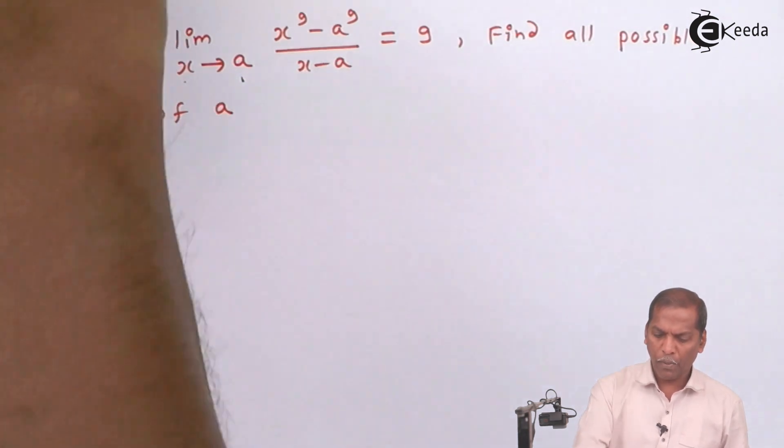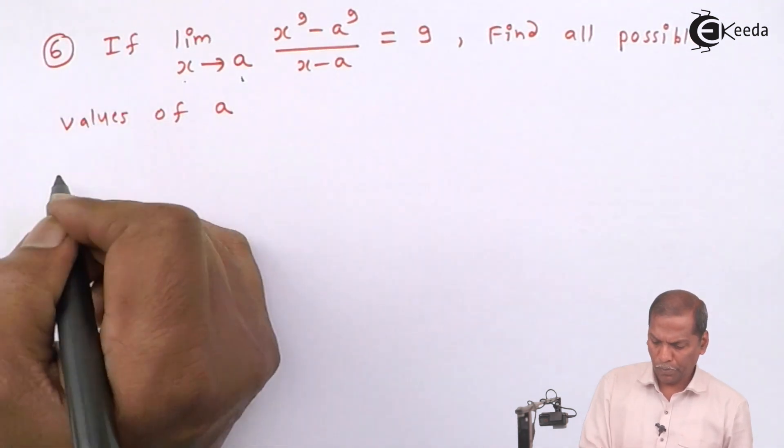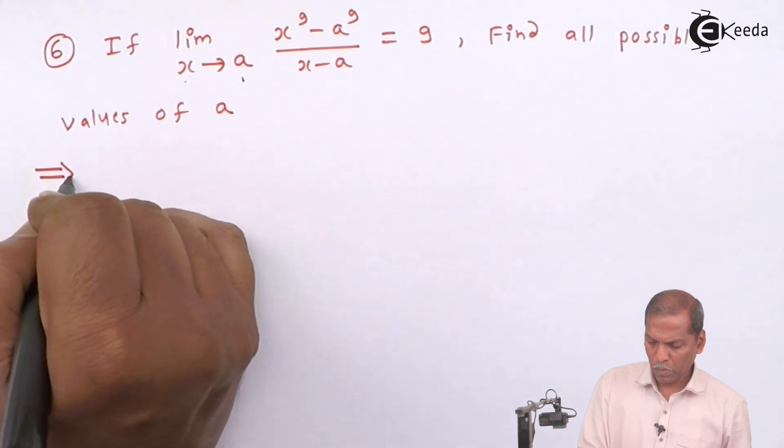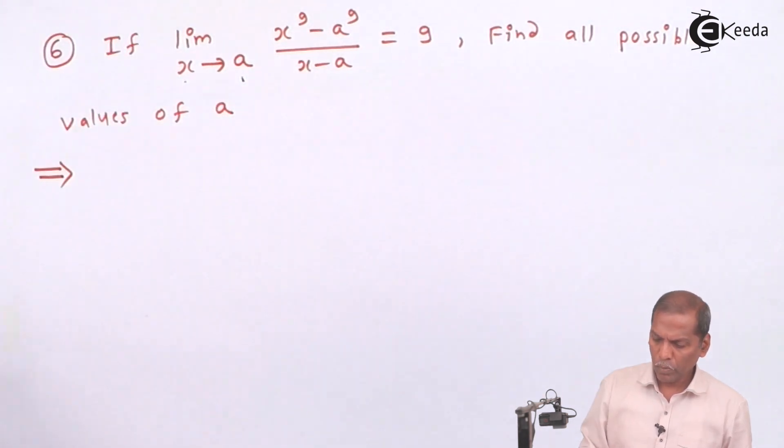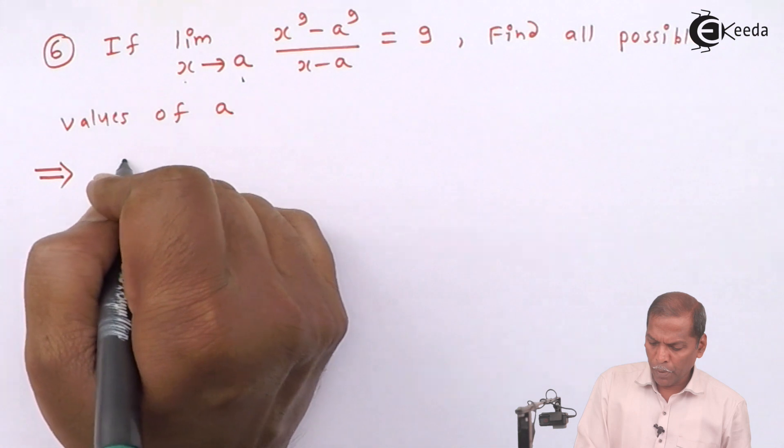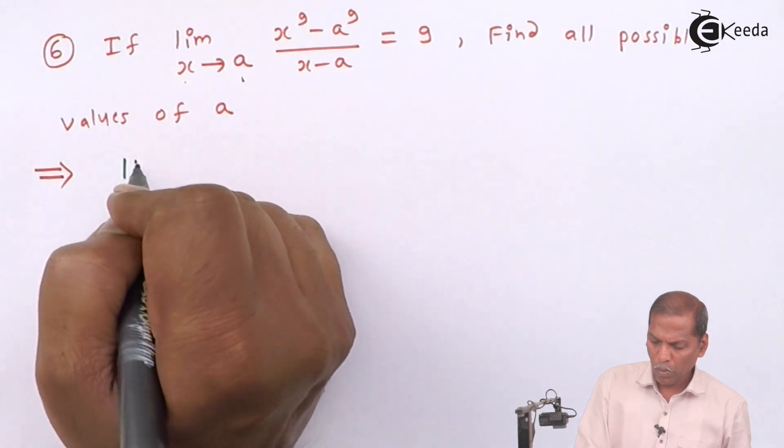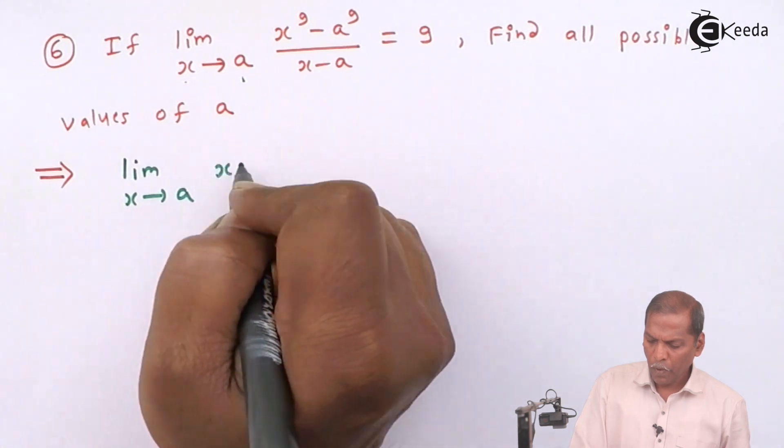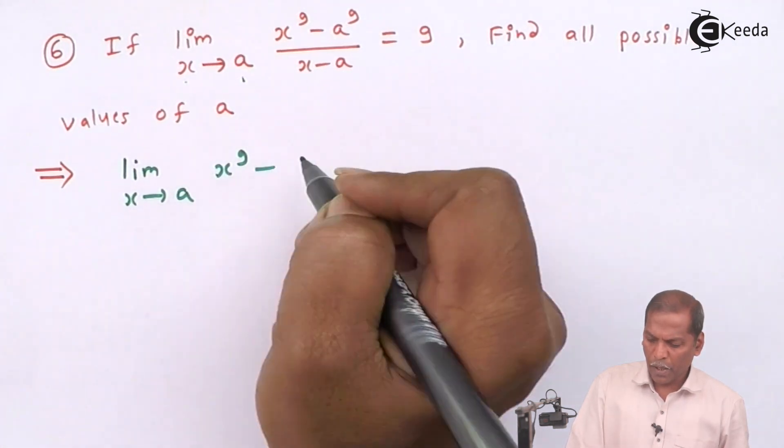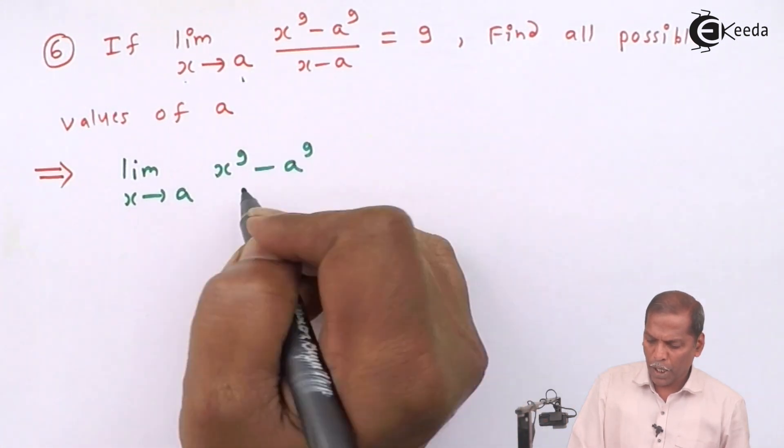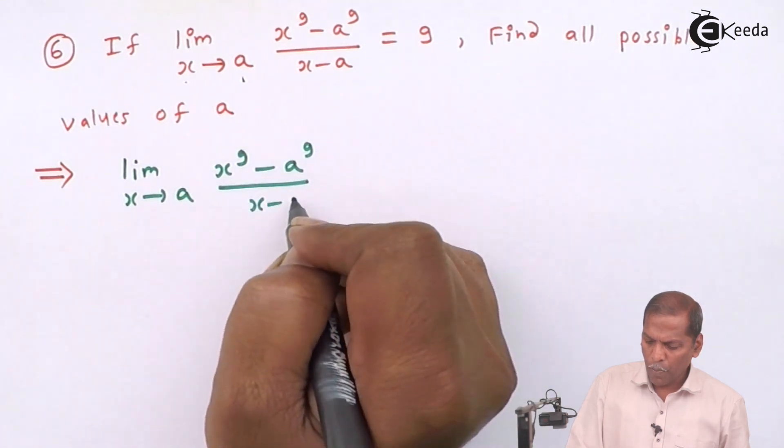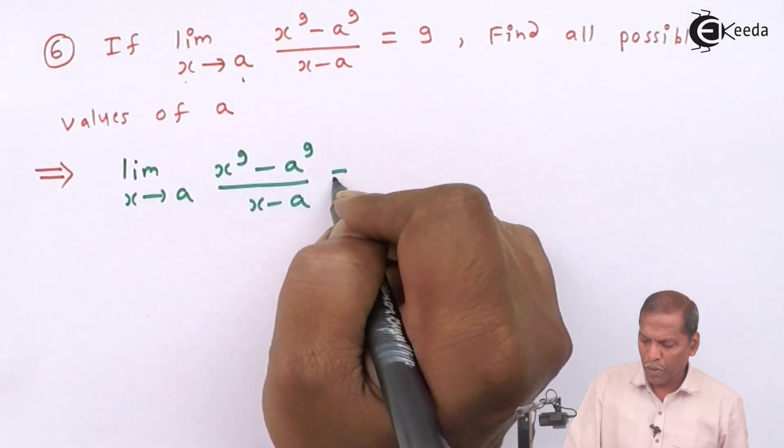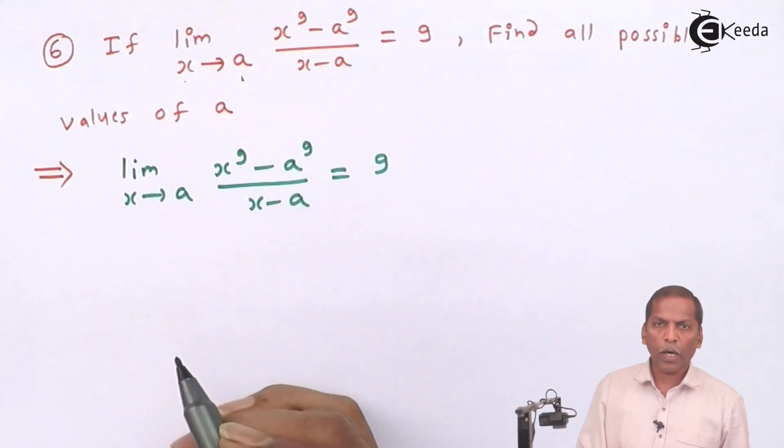Now let's see the solution. Given limit x tends to a, x raised to 9 minus a raised to 9 upon x minus a equal to 9.